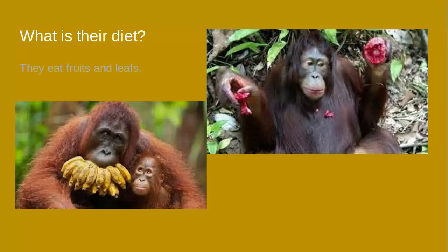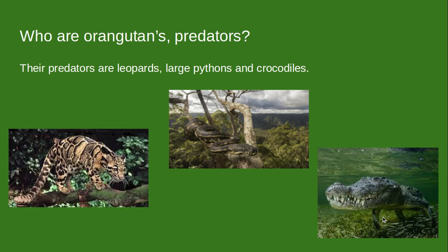What is their diet? They eat fruits and leaves which they find in the forest. In this picture they're eating bananas, and in this other picture they're eating some sort of red fruit. Who are orangutans' predators? Their predators are leopards, large pythons, and crocodiles, which are all found in the Borneo rainforest where they live.